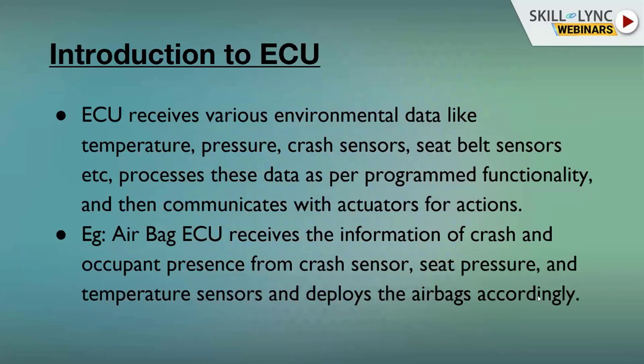An ECU receives various environmental data like temperature, pressure, crash sensors, seatbelt sensors, etc., and processes this data as per its programmed functionality, then communicates with actuators for different actions. For example, with seatbelt sensors, there is a tension sensor that activates whenever you plug in a seatbelt, so the ECU knows the seatbelt has been connected.